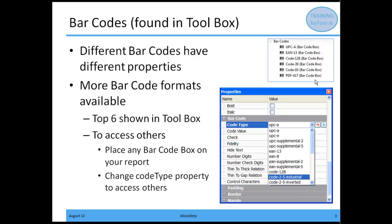If you want to place a barcode on your report that's not one of the six types in the toolbox, go ahead and put that barcode object onto the report, then click on that object, go into the properties, and under code type you can change it to be the code type that you need it to be.